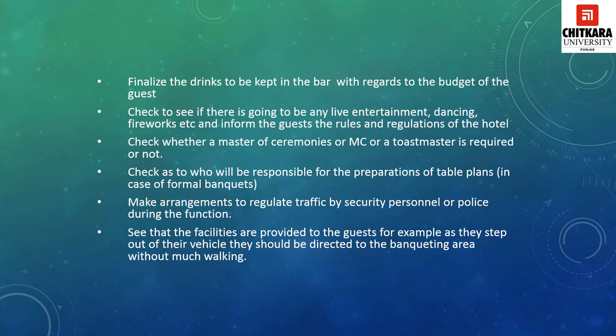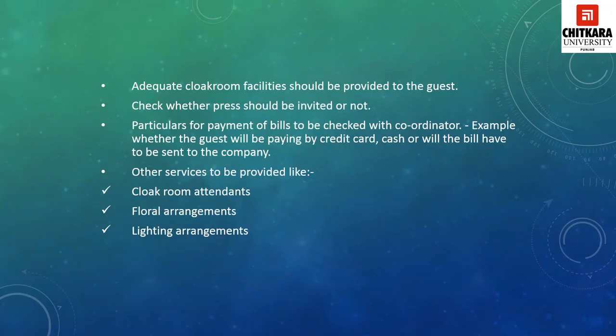Ensure facilities are provided to guests — for example, as they step out of their vehicles, they should be directed to the banqueting area without much walking, so a board or signage should be placed near the porch. Cloakroom facilities should be provided so guests can change if required. Check whether the press should be invited; if so, ensure safety measures and special allocations inside the banquet hall for press personnel. Payment method should be confirmed — whether the guest will pay by credit card, cash, or if the bill is to be sent to a company. Also check other services like cloakroom attendance, floor arrangement, and lighting arrangements.